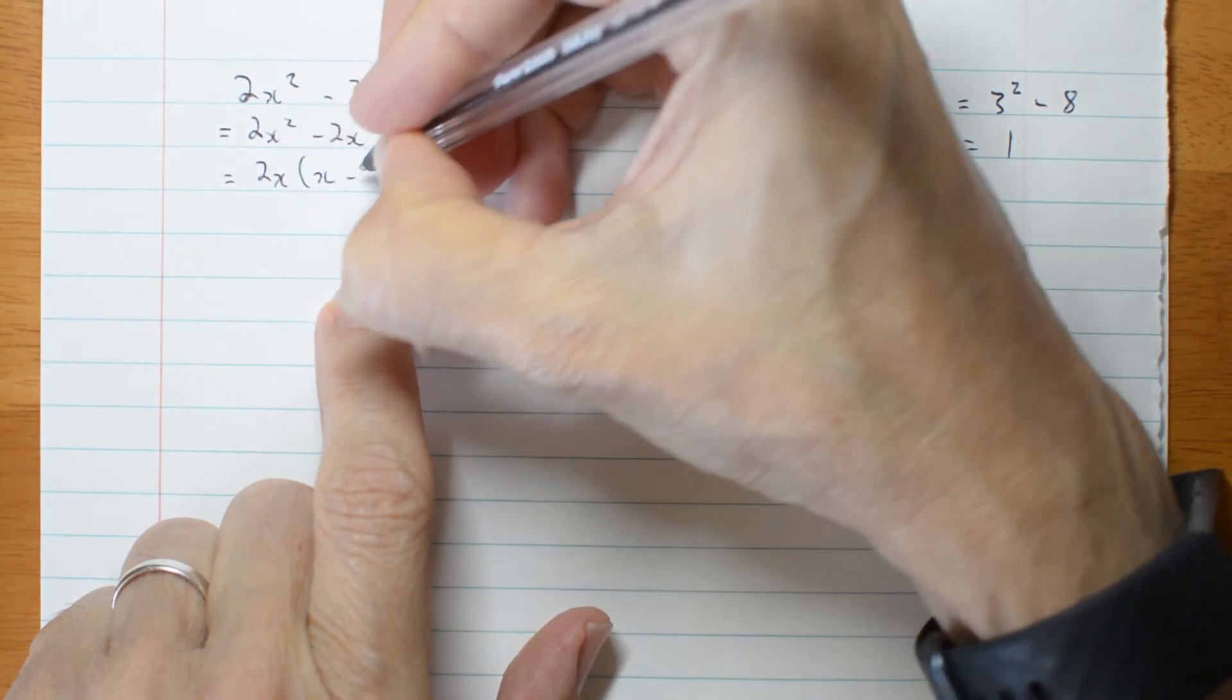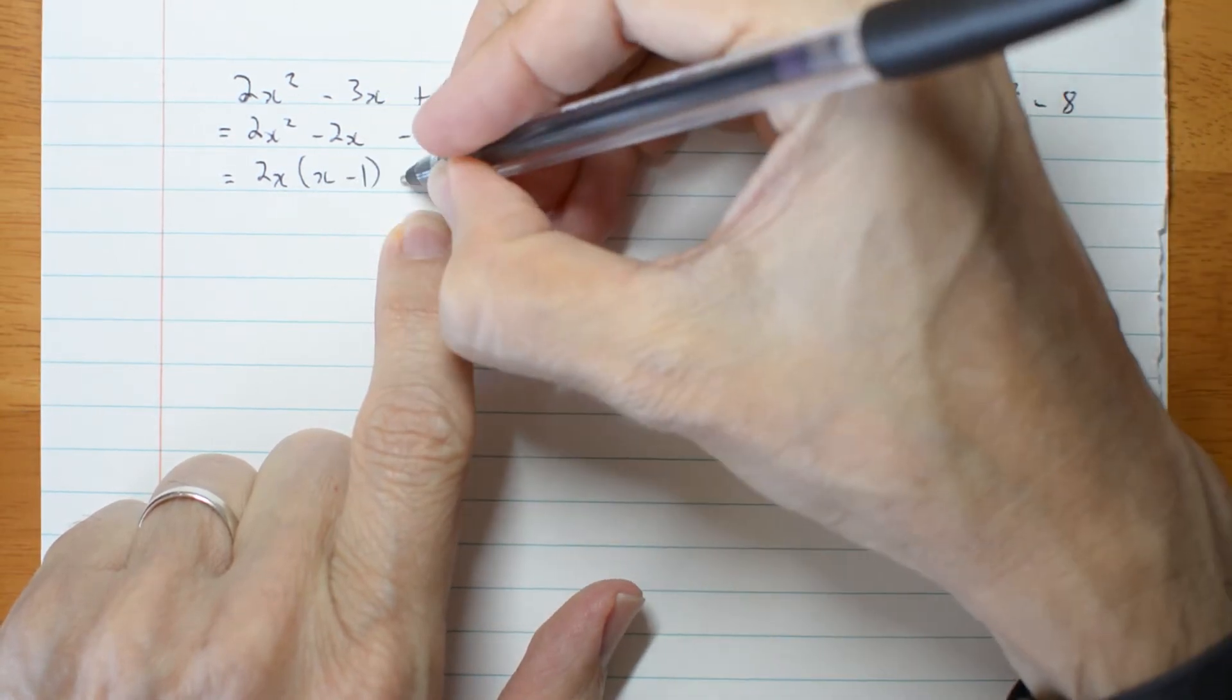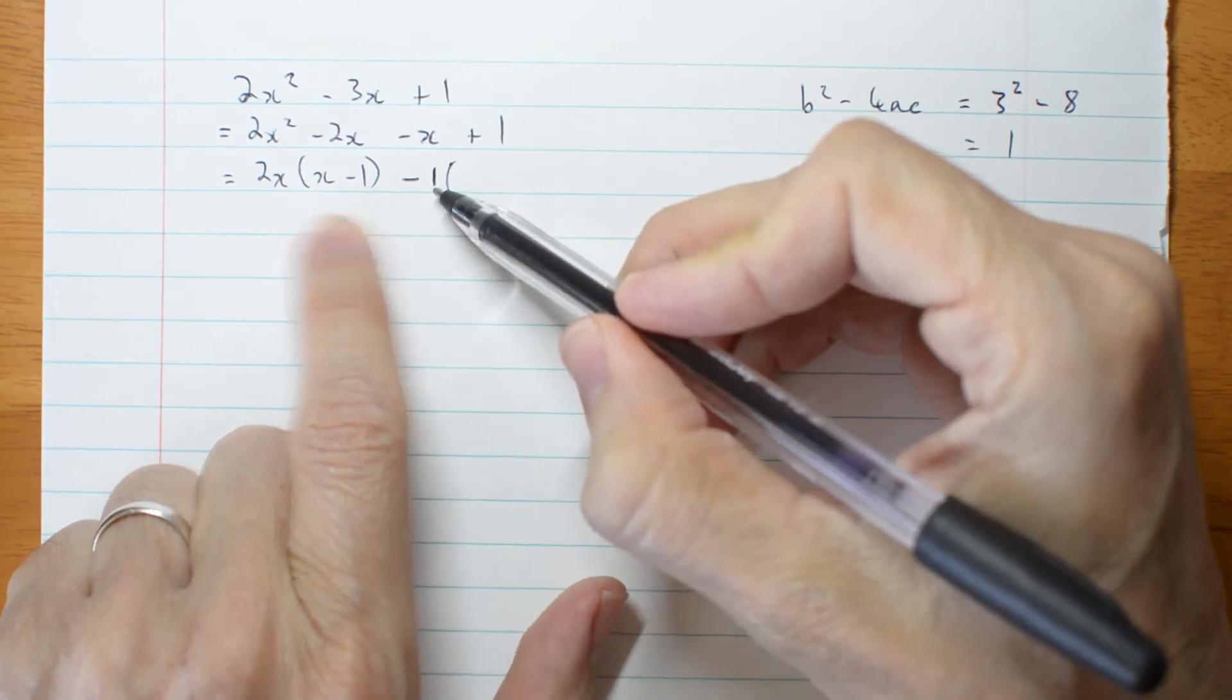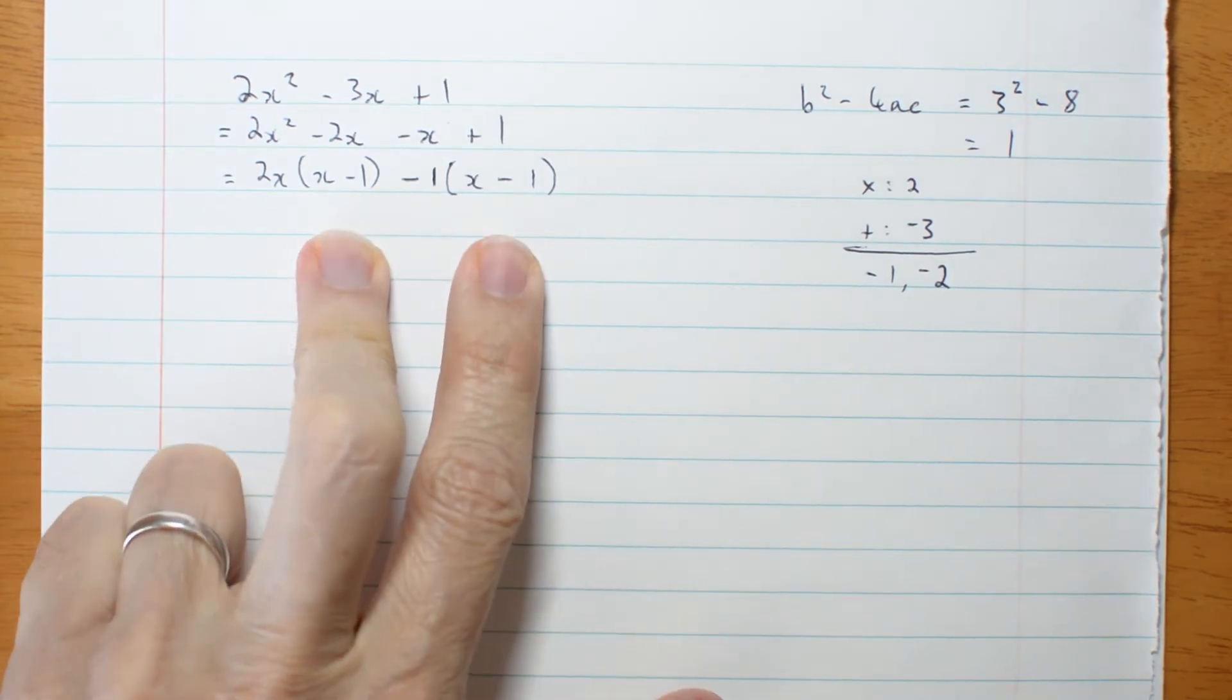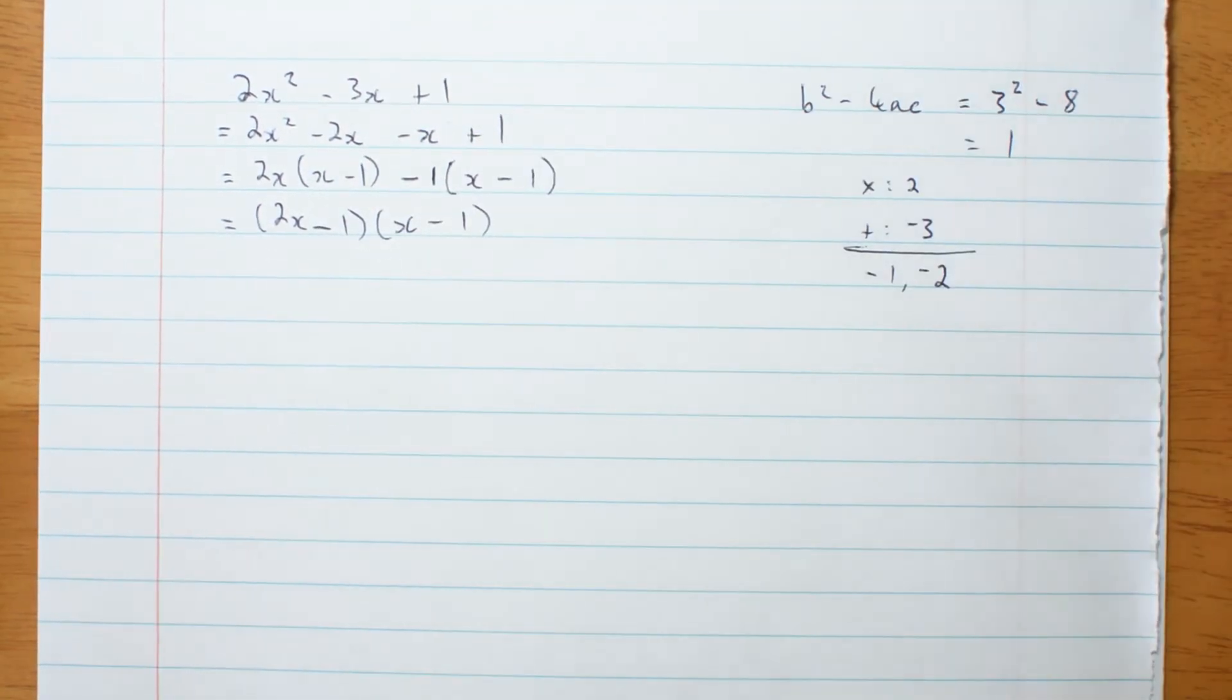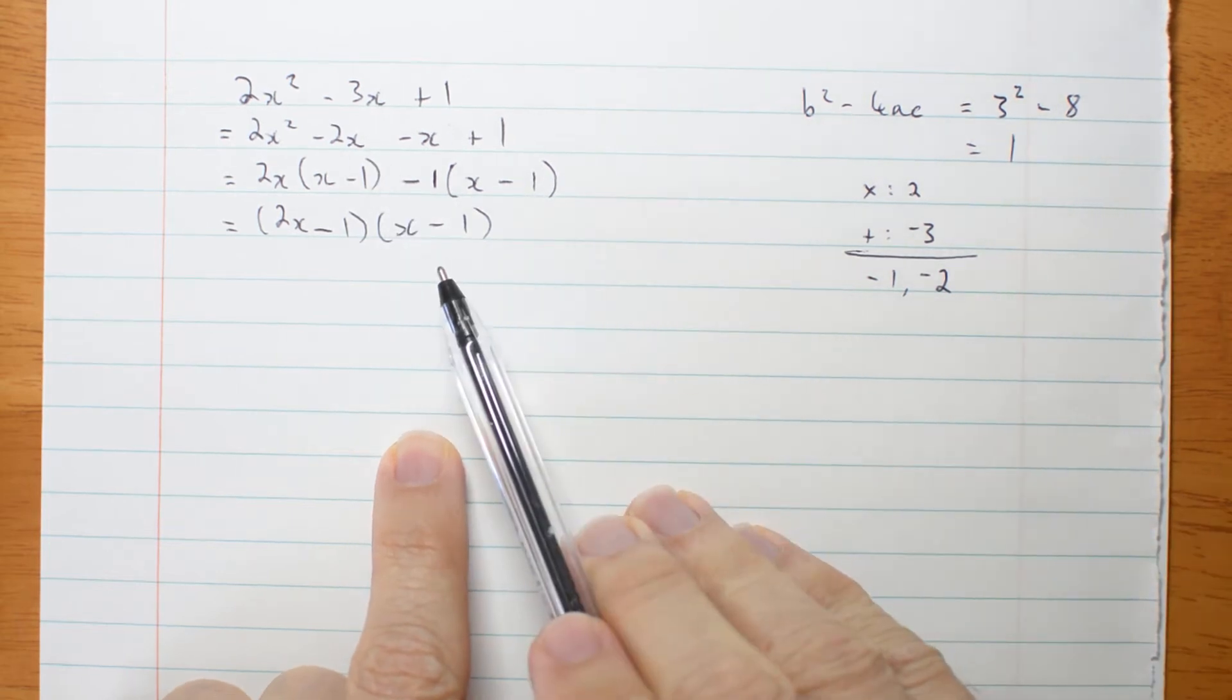Minus 1x plus 1. Factorize in pairs, x minus 1. Now here's a trick. I'm looking for x minus 1. I've got minus x plus 1. So I'm going to take out a negative 1. I'm going to write the negative 1 so you can see. So I'm going to get x minus 1. Now you can see a common factor. 2x minus 1 each times x minus 1. So this was a perfect square so it was pretty easy to factorize. But what if it's not a perfect square?